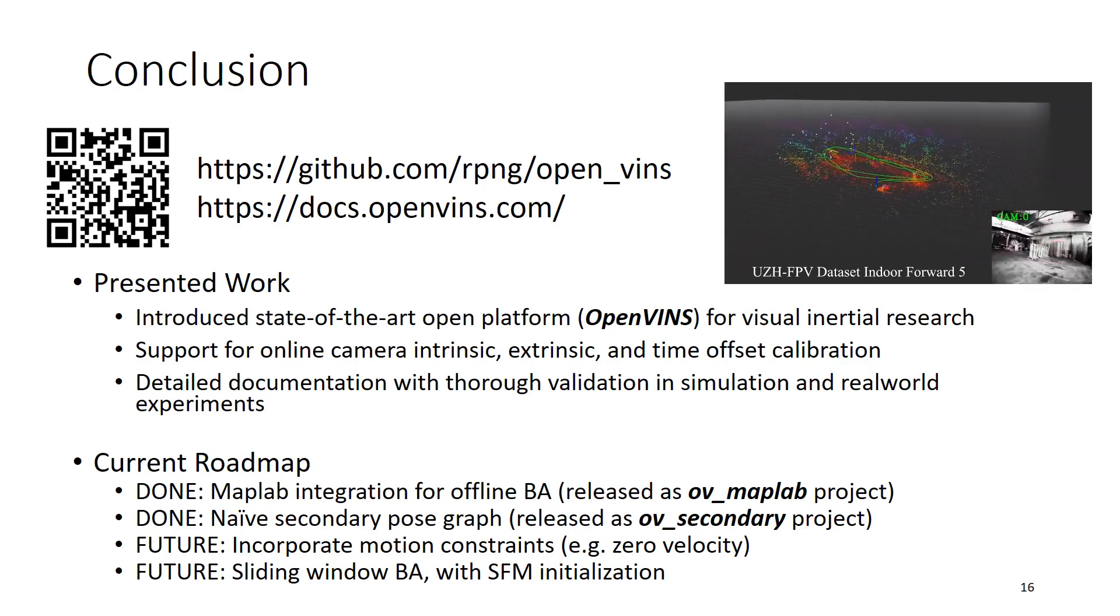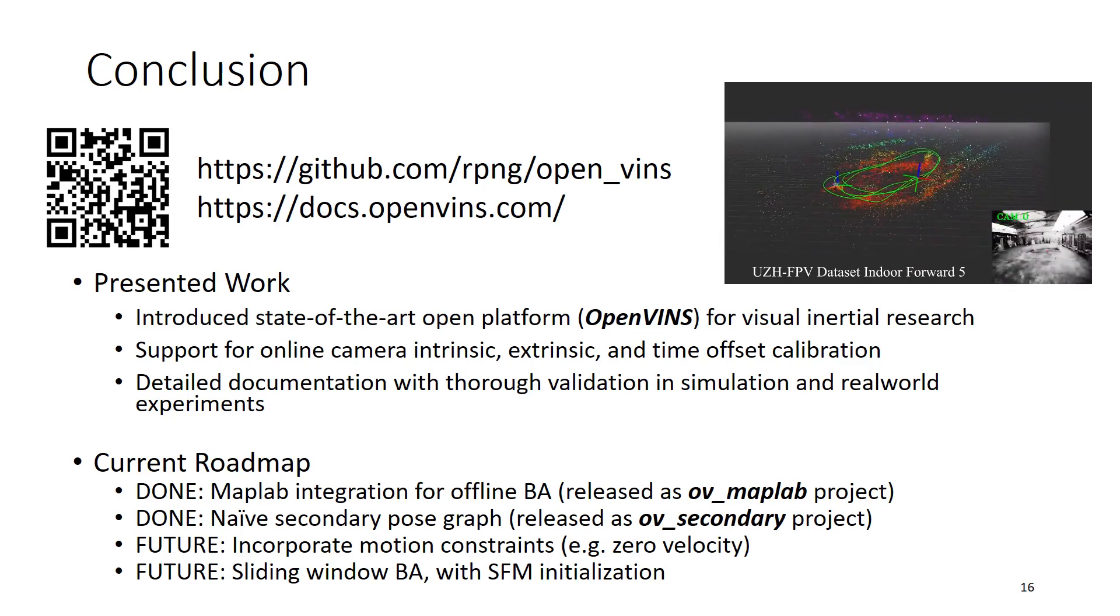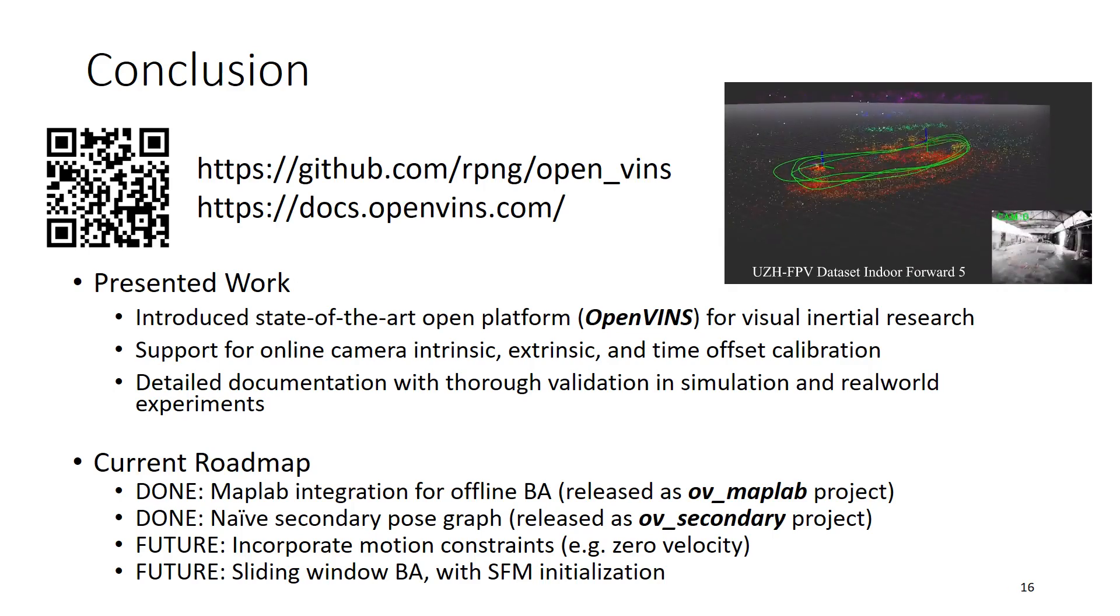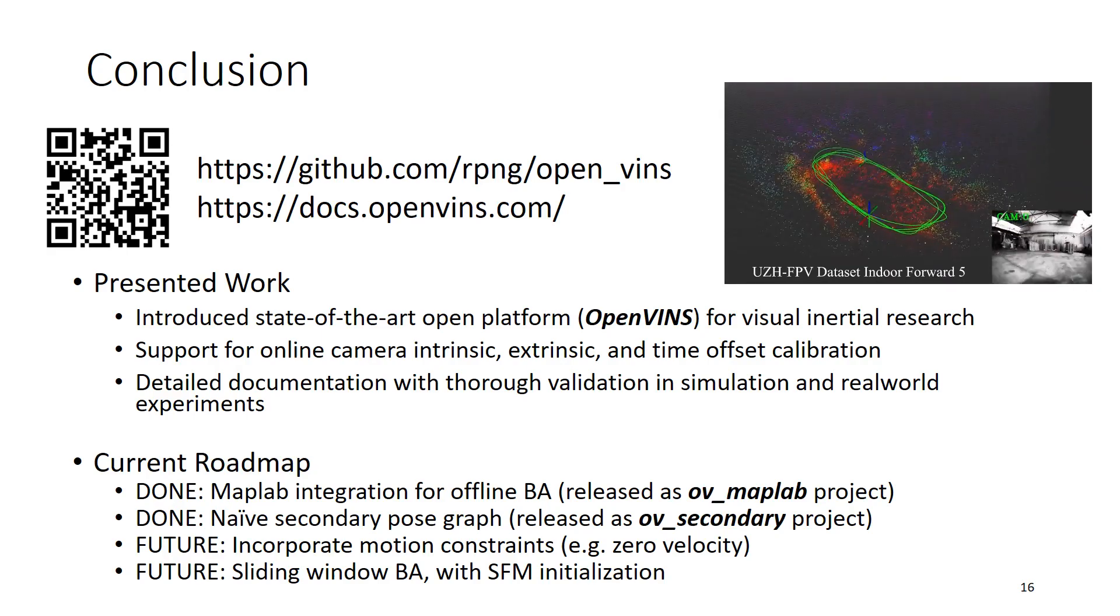In the future, we want to incorporate motion constraints such as zero velocity updates. We also want to include a sliding window BA and structure from motion initialization into the repository. Thank you.